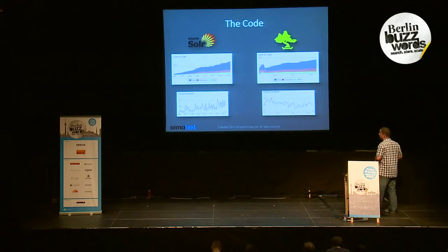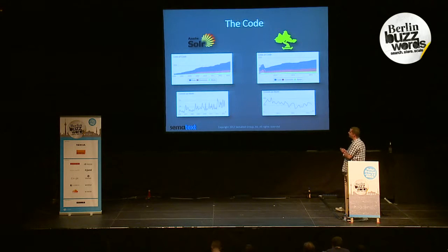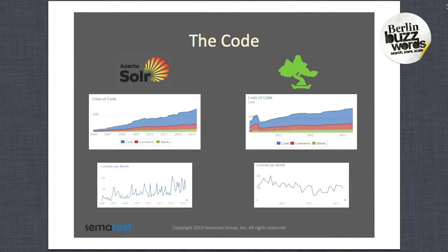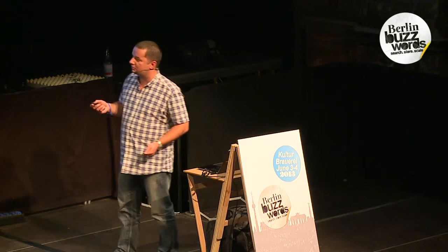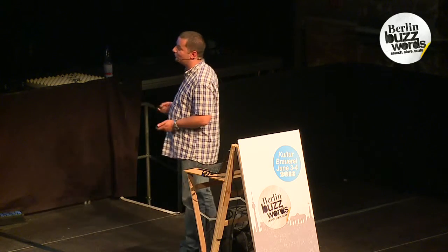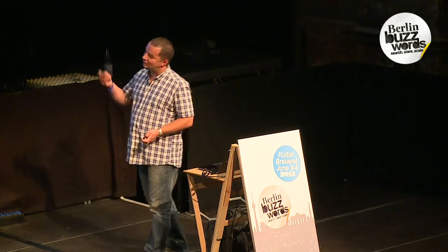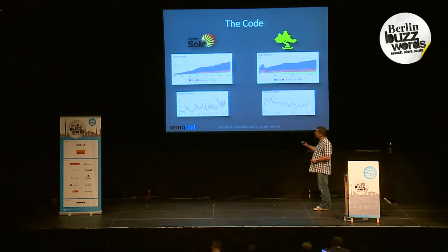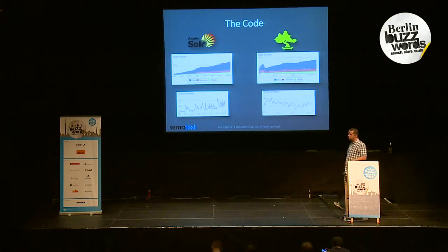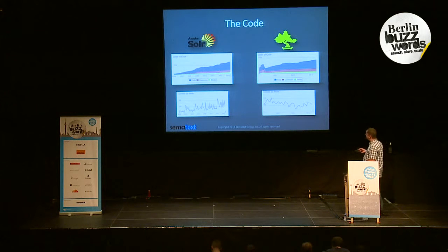The code is pretty important. We can't see anything about the quality of code, but we can see the lines. In case of Solr, we have more than 220k base code lines. In case of Elasticsearch, we have more than 300,000. Commits per month are varying. For Solr, they are more than 100, varying to almost 200. In case of Elasticsearch, we have something above 100.